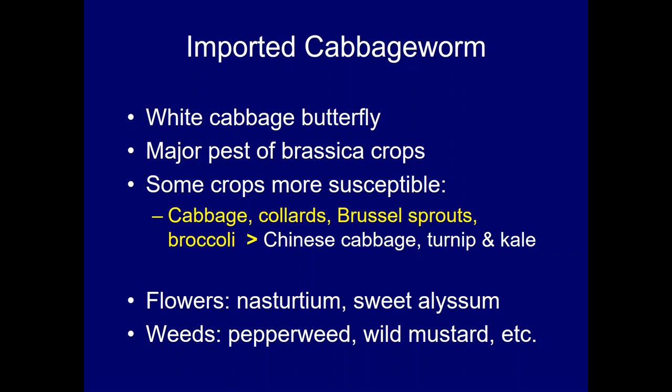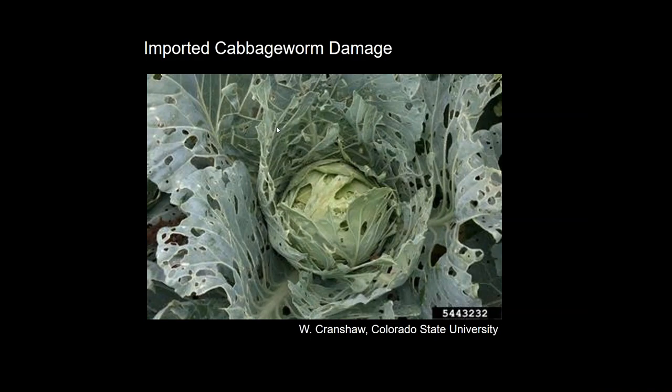The caterpillars can also be found feeding on brassica weeds like pepperweed and wild mustard, so it's important to observe what insects are found on weeds near the fields. Typical damage is quite severe leaf feeding, and another problem is the frass or excrement the caterpillars produce as they feed, which can cause contamination of the produce.